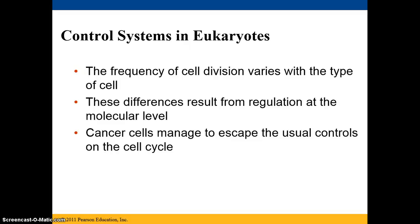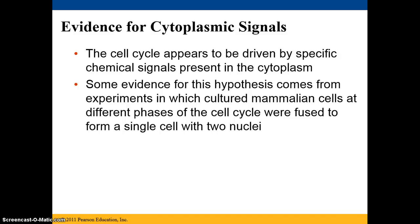The frequency of cell division varies with the type of cell, and these differences always result from something occurring at the molecular level — this is a way to regulate the cell cycle. Cells that escape normal cell cycle controls result in cancer or uncontrolled cell division. The cell cycle appears to be driven by specific chemical signals present in the cytoplasm, and an experiment fused cultured mammalian cells at different phases to form a single cell with two nuclei, providing evidence for this hypothesis.